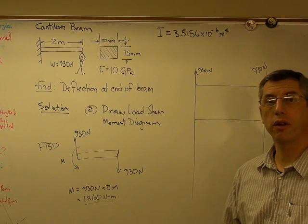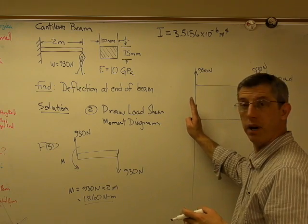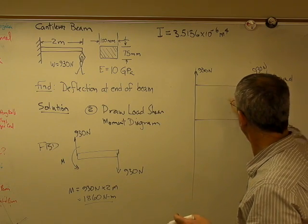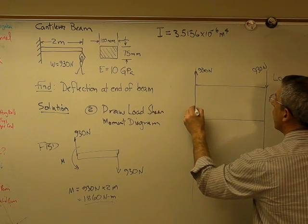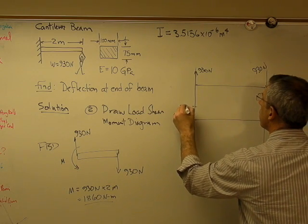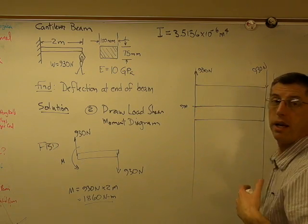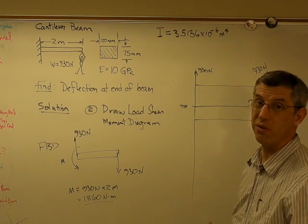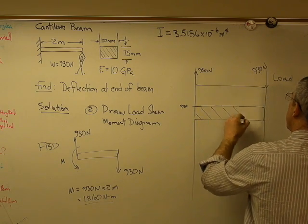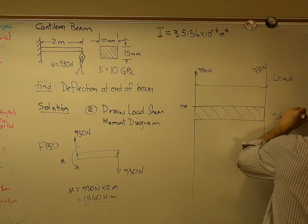Now to draw the shear portion of the diagram, we work from left to right. So I'm going to start over here, add that shear, carry it over, and then add that one. We'll step out of the frame here. Go up to 930, over, and back down to zero again. If I do this right, I should go back down to zero again. If I don't, something's wrong. So there we go. So there's that shear in newtons.